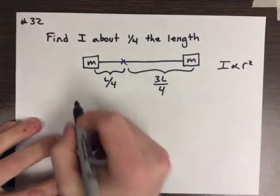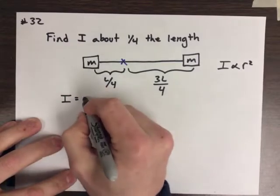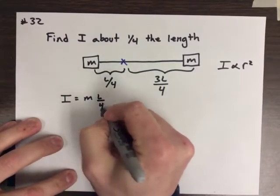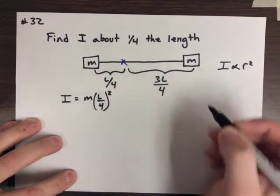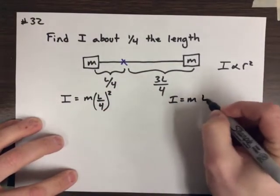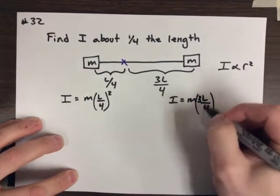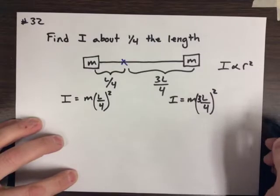So, we're going to go ahead and do the same setup. We find the moment of inertia for the one on the left, and it is m times L over 4 squared. Find the one on the right, and I get m times 3L over 4 squared.